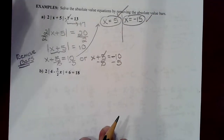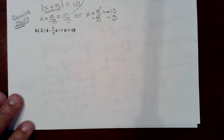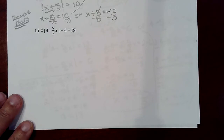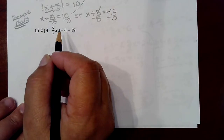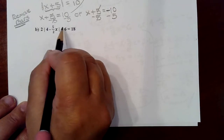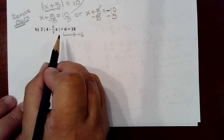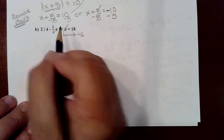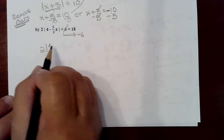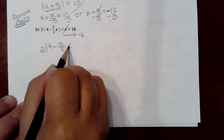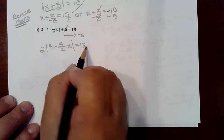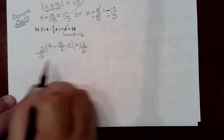So we have two answers and we mentally checked them. The next problem contains a fraction — that's the only extra step — but you still do all the same steps as the previous example. You begin by thinking about how to isolate the absolute value bars. The first thing is to remove anything added or subtracted on the outside, so we move the term to the other side making it a negative 6, which is the same as subtracting 6 from both sides.